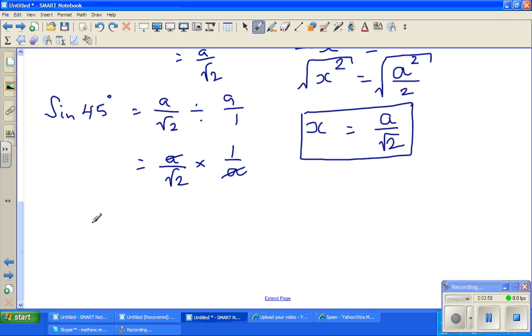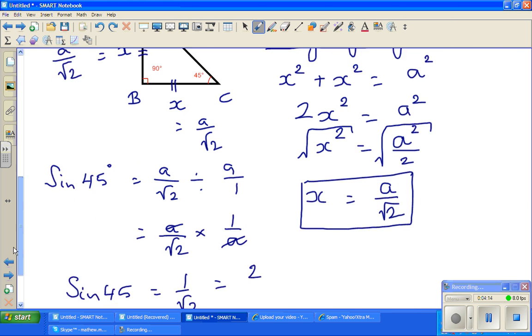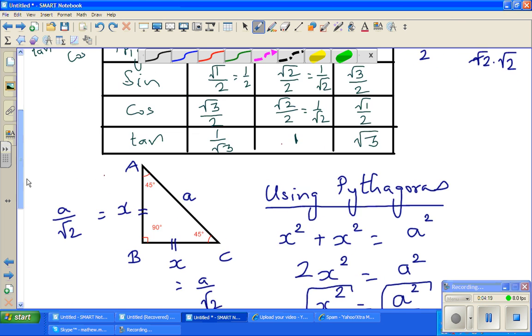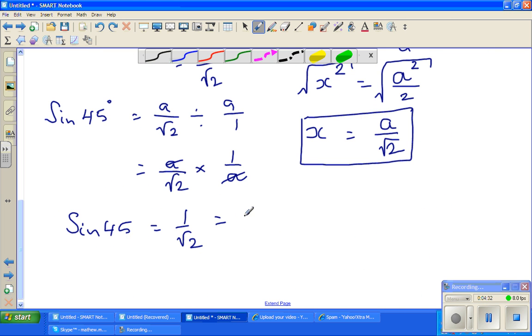So that becomes A over root 2 times 1 over A. So this A and this A gets cancelled. So sine 45 is 1 over root 2, which is the same as root 2 over 2. This is root 1 over 2, this is root 2 over 2, this is root 3 over 2. So this is same as root 2 over 2.